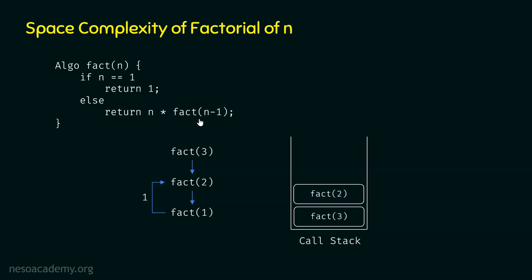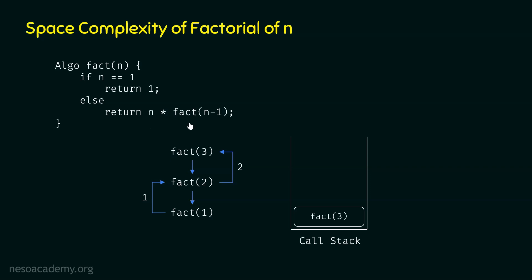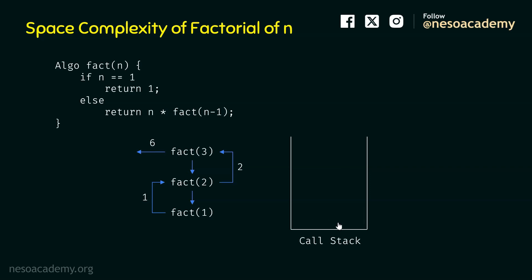Fact(3) receives the value 2, computes 3 times 2 equals 6, and returns 6 to its caller — perhaps the main function. The activation record of fact(3) is popped, and the call stack is now empty, meaning execution is complete.